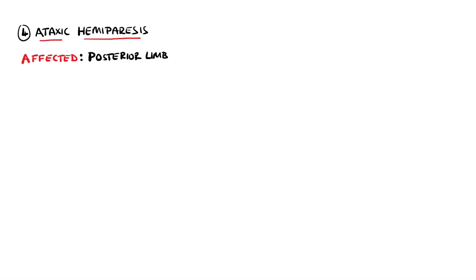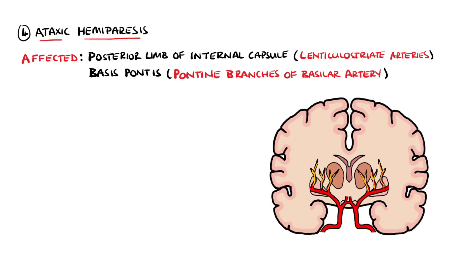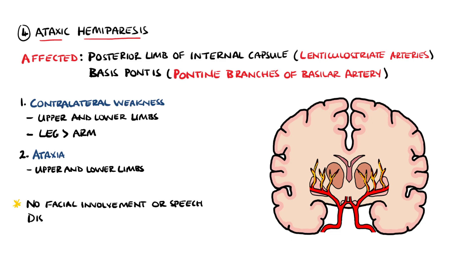Ataxic hemiparesis is next, which is seen when there is damage to the posterior limb of the internal capsule or the basis pontis of the pons. The lenticulostriate arteries of the middle cerebral artery are the involved vessels in this syndrome, but it may also be caused by involvement of the small penetrating arteries of the basilar artery. The presentation includes contralateral upper and lower limb weakness, typically more prominent in the leg than in the arm, along with upper and lower limb ataxia. Note that in ataxic hemiparesis there is no facial involvement or speech disturbance.